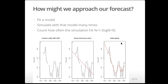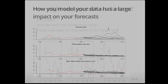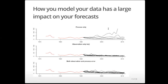A more recent approach — it's been around since the 1990s — is to treat the counts as having observation error, with a hidden population process. We're going to try to estimate what that hidden population process is. Those different approaches to how we think about the data have very large consequences on what we would report as the probability of extinction.